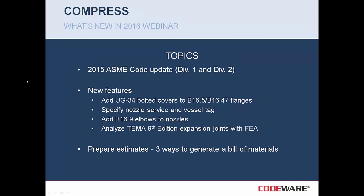Some of the topics I'm going to be covering today are the 2015 ASME code update for Division I and Division II. A couple of new features include adding UG-34 bolted covers to B16-5 or B16-47 flanges, specifying nozzle services and vessel tag information, adding B16-9 elbows to nozzles, and the TEMA 9th edition expansion joint now done through FEA. Finally, we'll cover how to prepare estimates — we've introduced three new ways to generate a bill of materials in 2016.